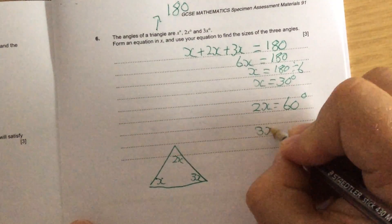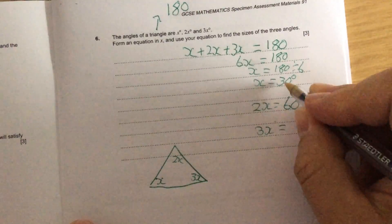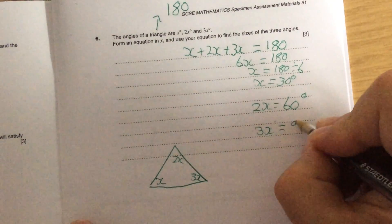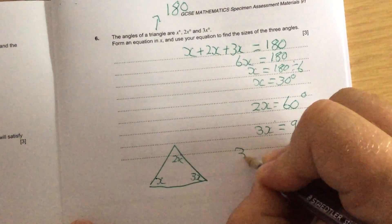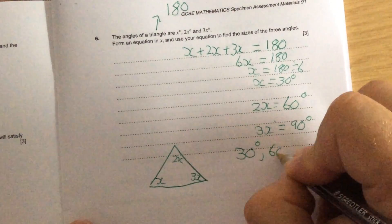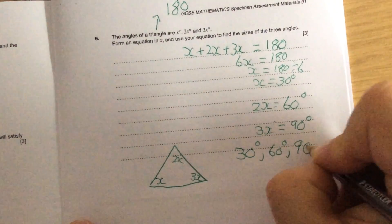And 3x is 3 times x, and x is 30. So 3 times 30 is 90. So my answer is 30, 60, and 90 degrees.